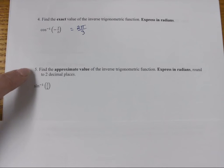Now, in this case, we want to find the approximate value. Approximate means it's not going to be exact, so it won't be a fraction. It will be a decimal. The inverse trig function, expressed in radians, rounded to two decimal places.